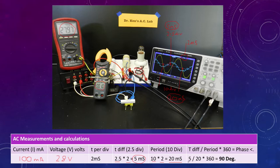So if we take our 5 milliseconds, divide it by 20 and multiply it by 360, there is a difference in angle of 90 degrees.